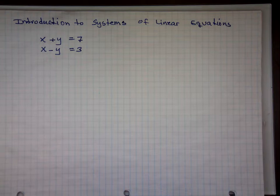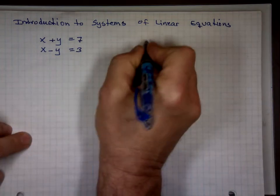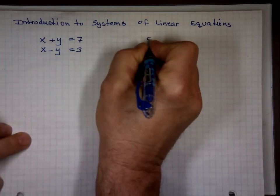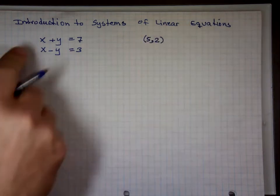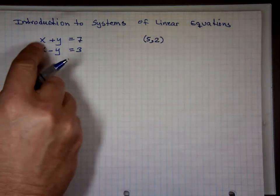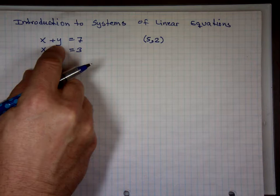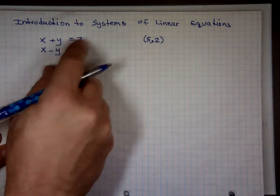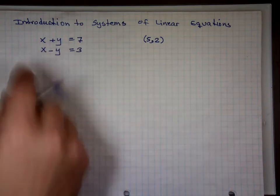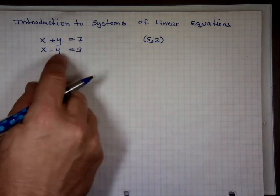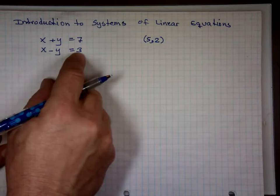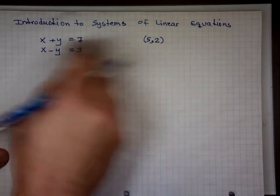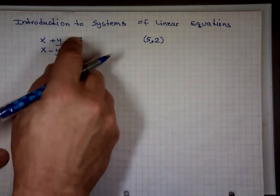Looking at this quickly, I think the answer is x equals 5 and y equals 2. When x is 5, what's 5 plus 2? That's 7 — is that equal to 7? Yes. What's 5 minus 2? That's 3 — does it equal 3? Yes. So that point actually satisfies both of these equations.